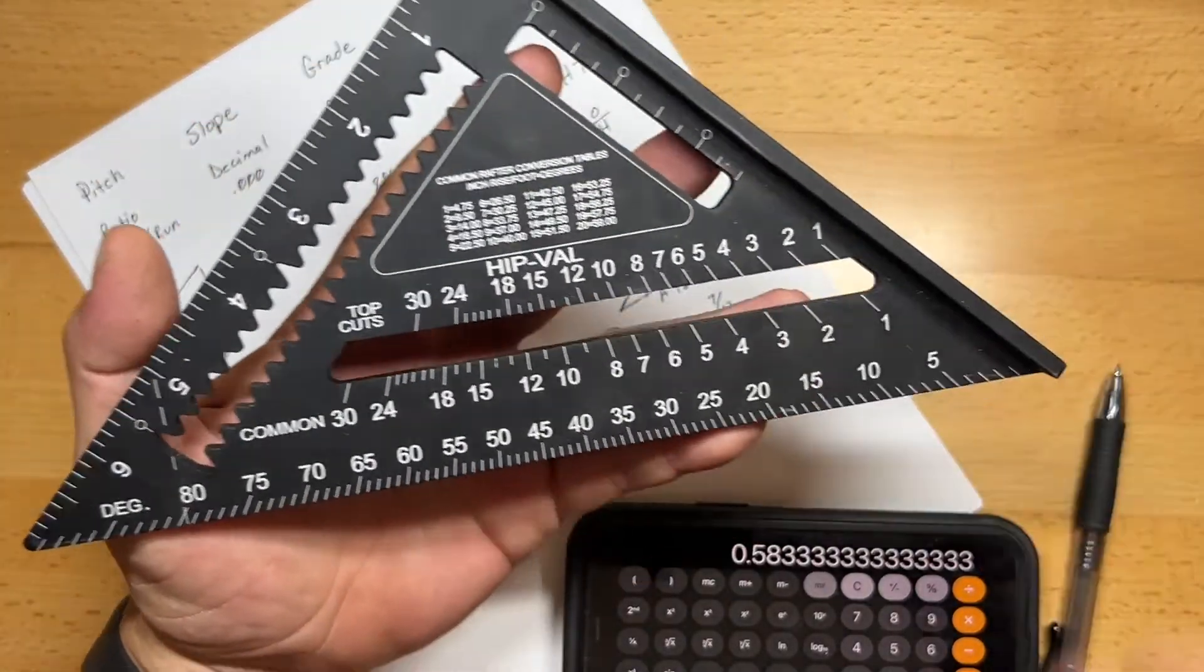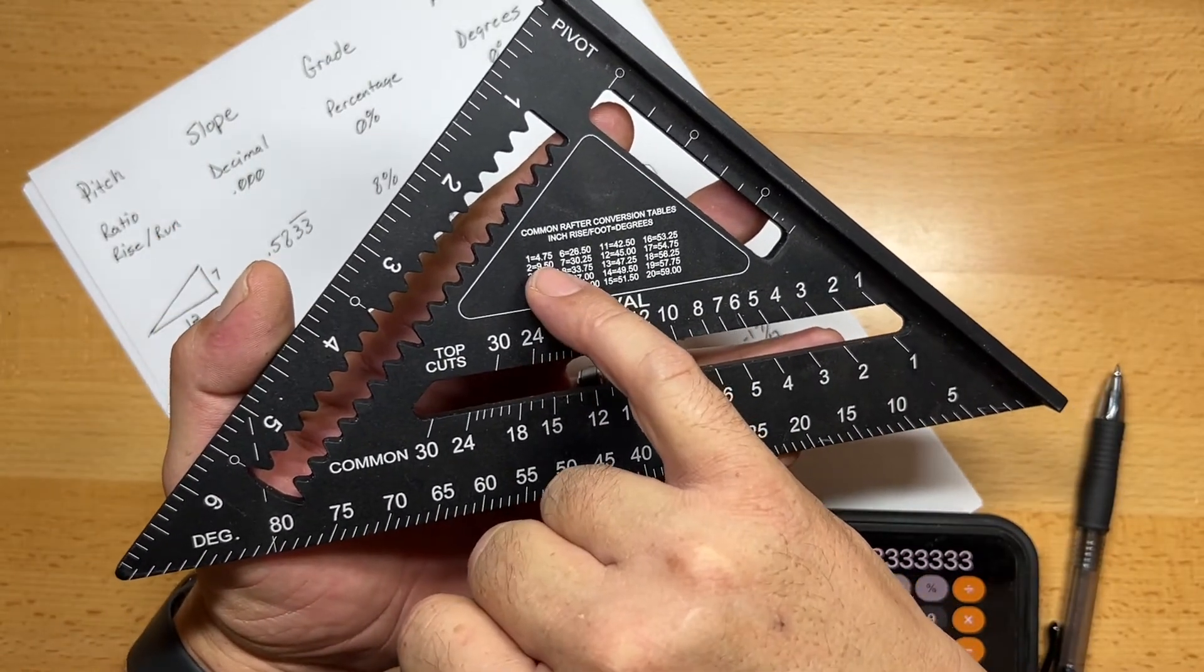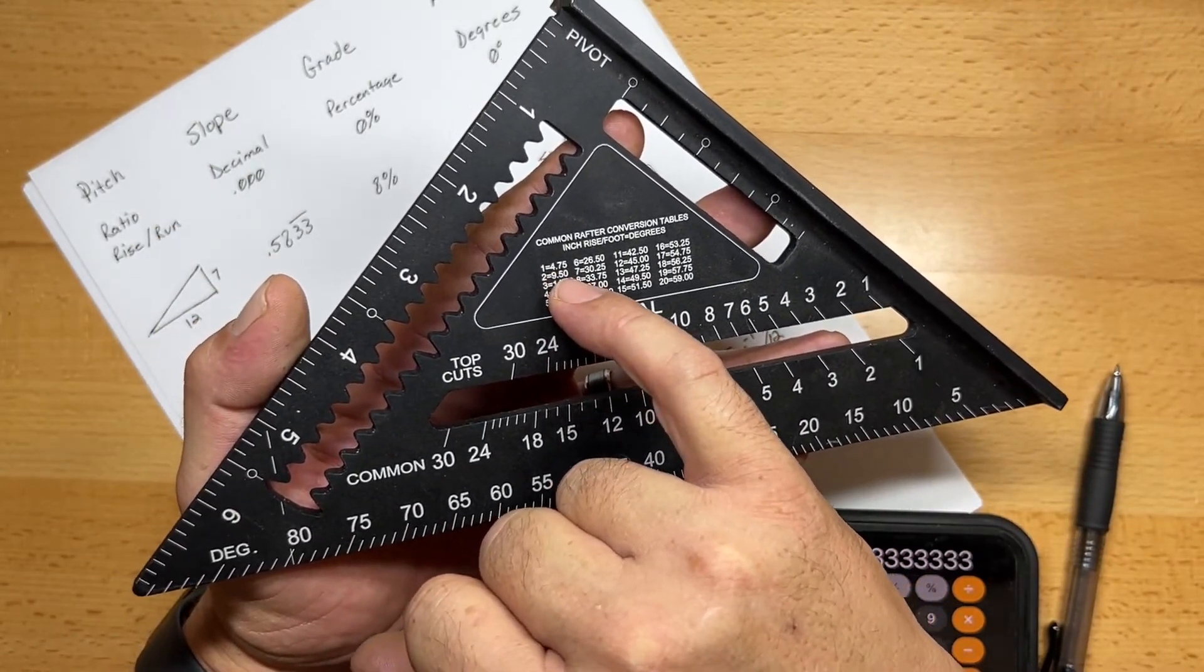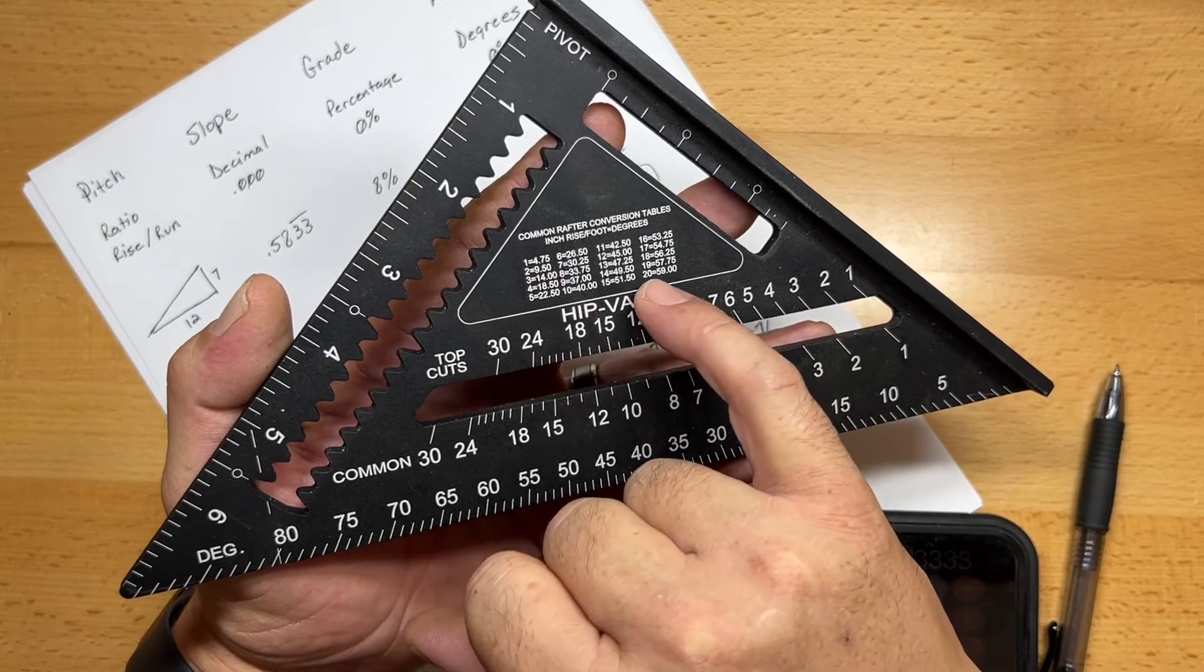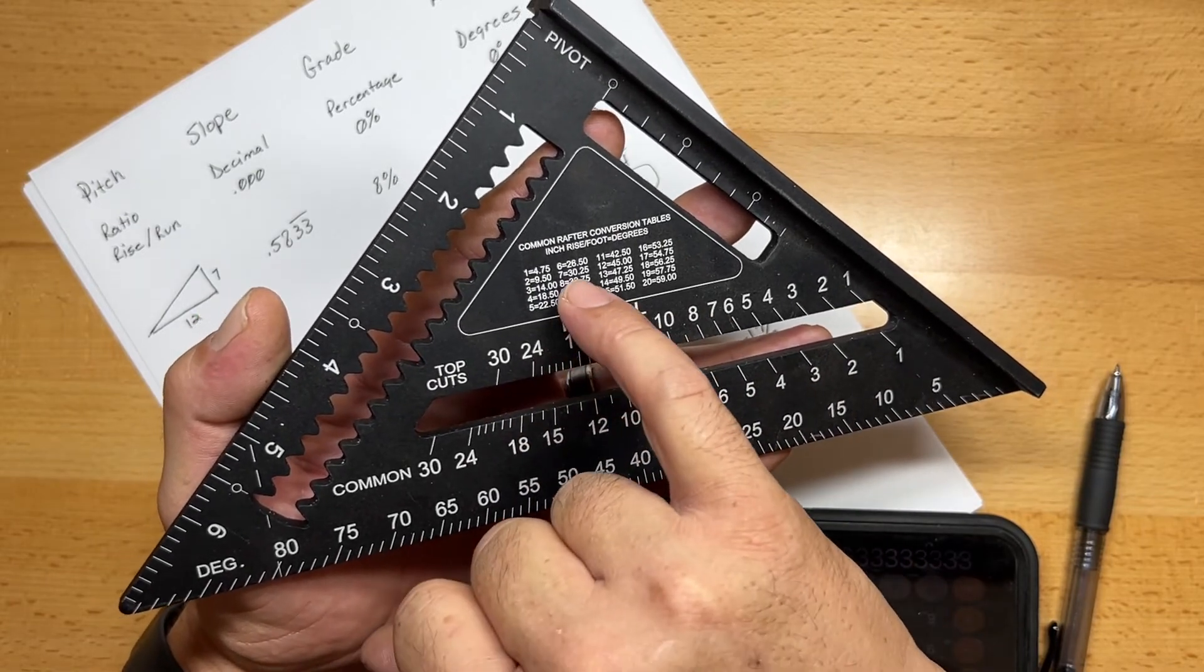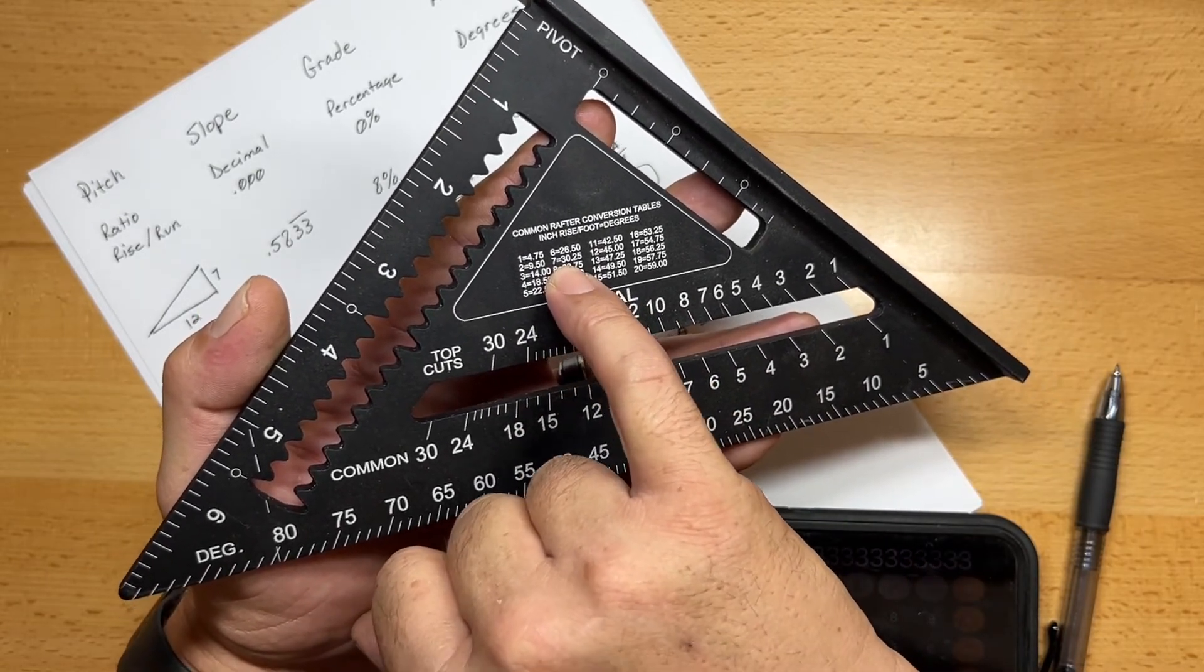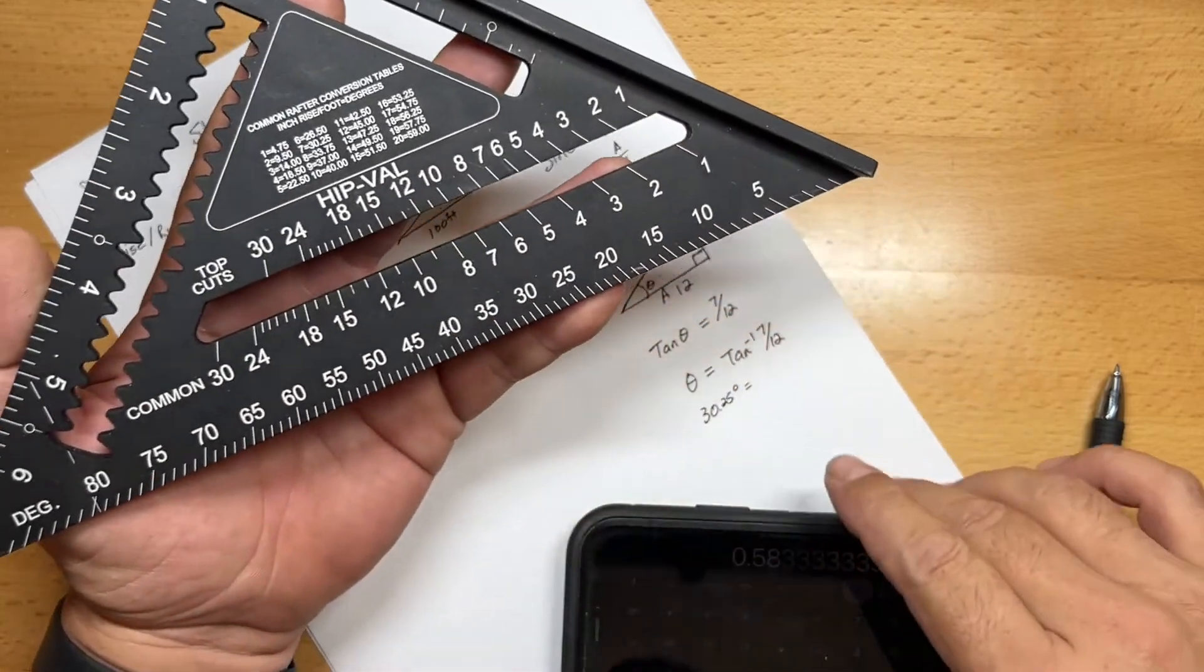So that's how you calculate using the pitch, how you get the angles of each of those different pitch numbers. On your common rafter square, you have all these listed. So for your 1-12 pitch, 2, 3, 4, all the way up to 20. And if we go to our example, you can see that the 7 is at 30.25 degrees.